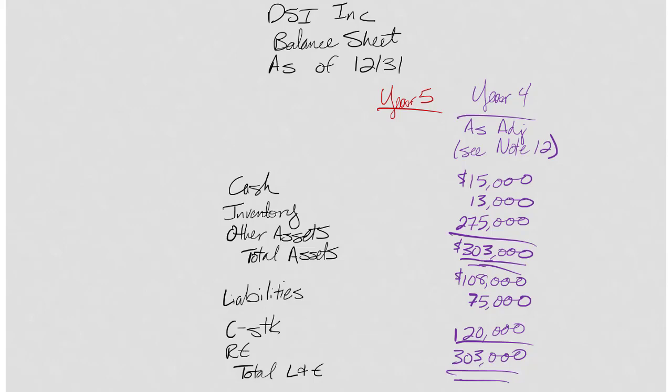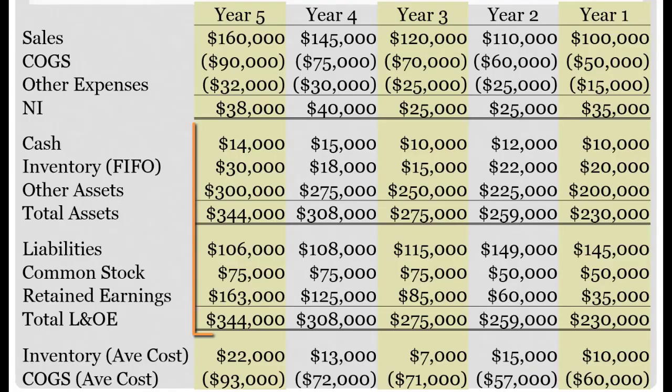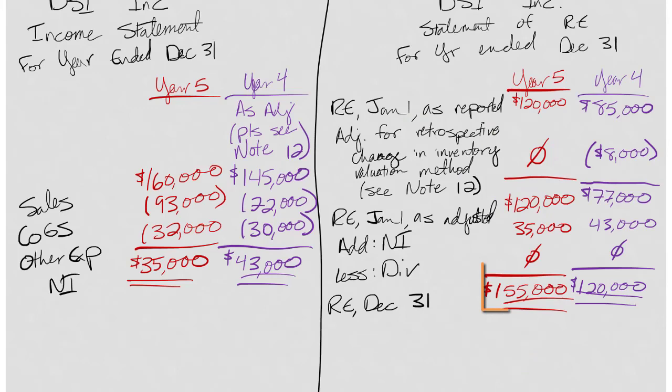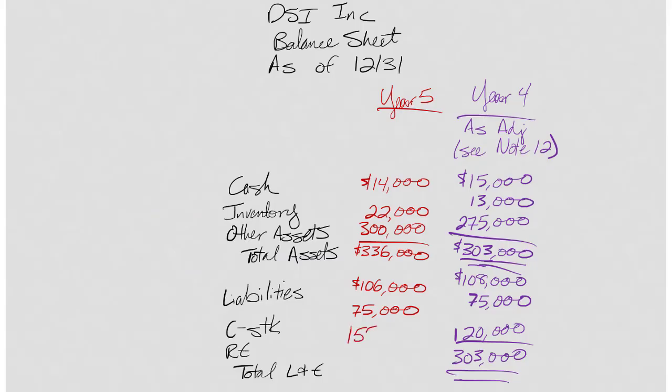For year five, same basic process. The only difference is I don't need an as adjusted. Let's go back again. $14,000 for cash. I won't use the $30,000, I'll use the $22,000 for inventory. I will use the 300. I'll use the 106 for liabilities and 75 for common stock, but I won't use the 163. I'll get the new number from my statement of retained earnings. Cash, $14,000. Inventory under the new method is $22,000. Other assets, $300,000. If I add that up, I get $336,000. Liabilities, $106,000. Haven't sold any more common stock, so that's the 75. Retained earnings I'll get from my statement - that's $155,000. And if I add that up, looks like we balance. I can put in my double underline.